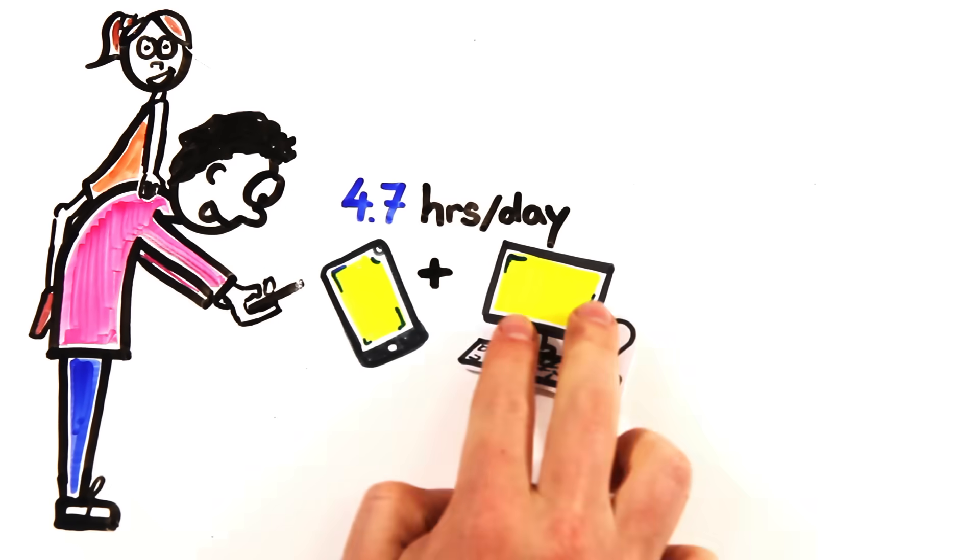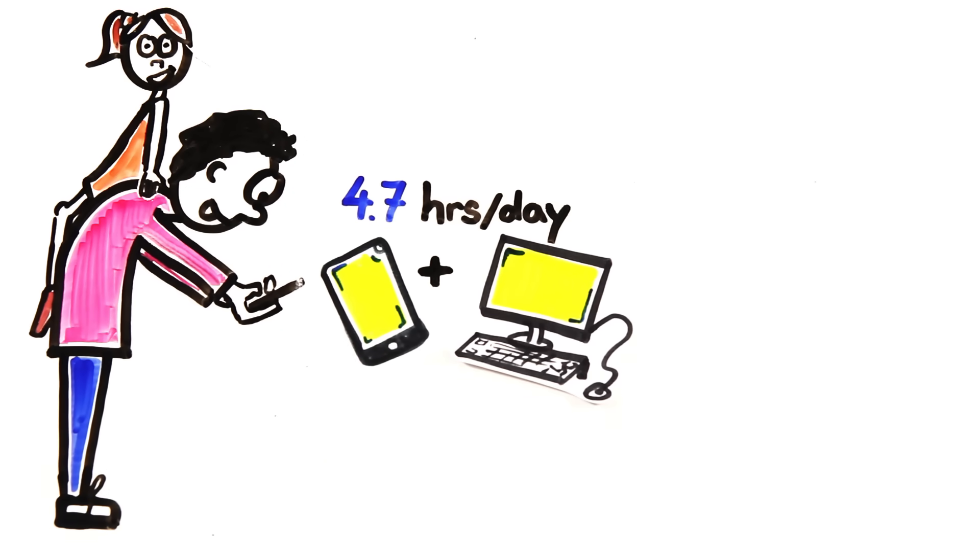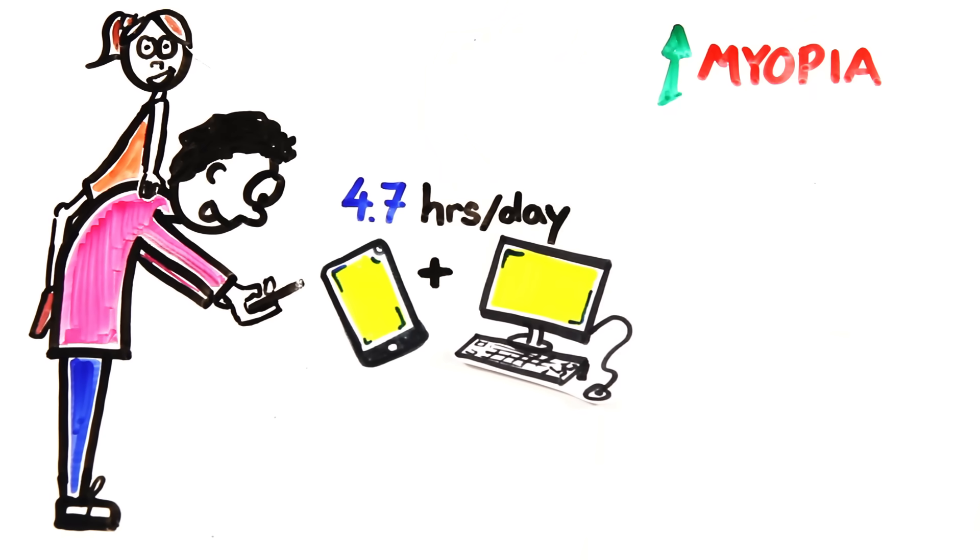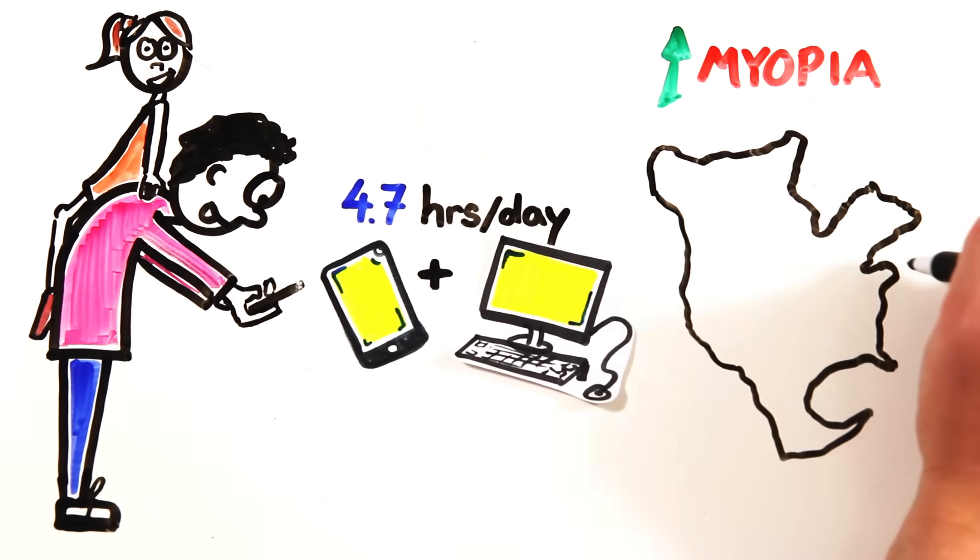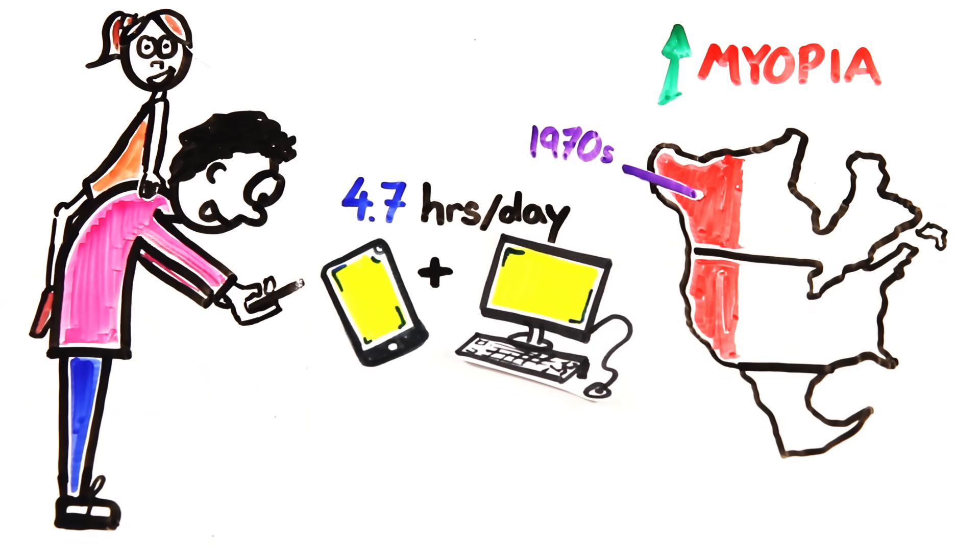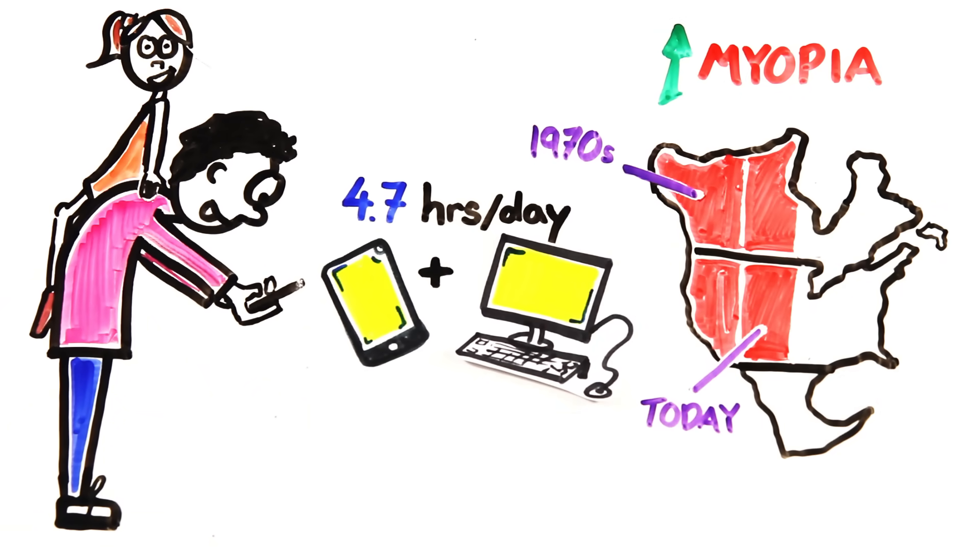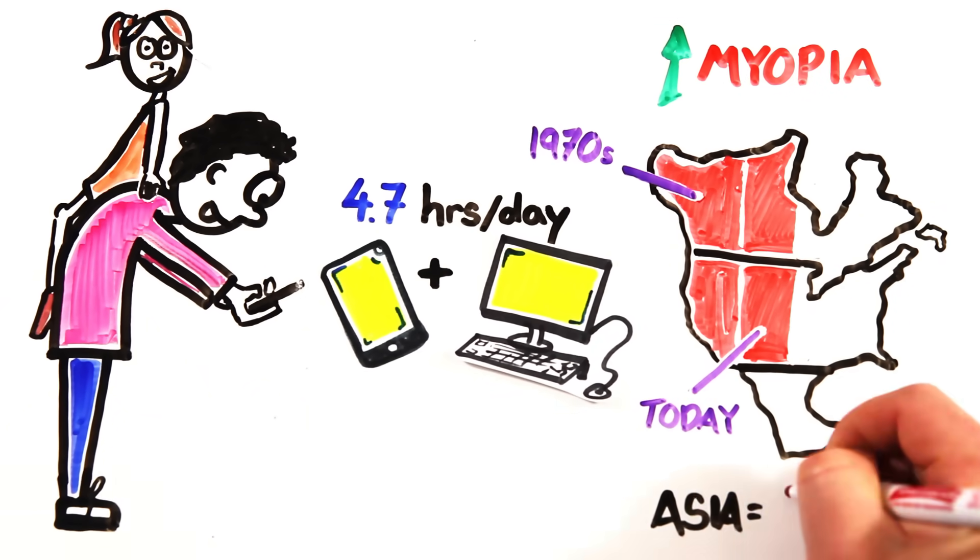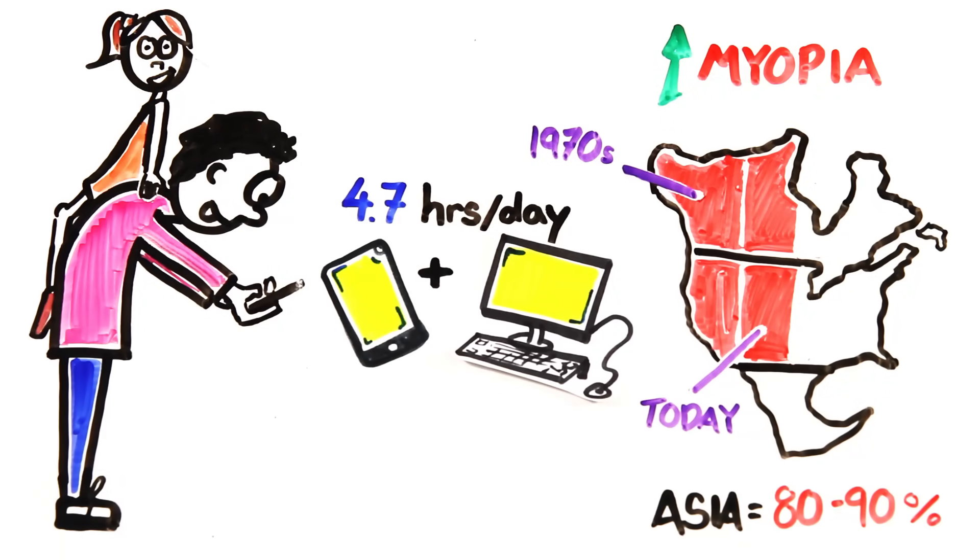This, combined with the length of time spent in front of computers, has led to an increase in the prevalence of myopia or nearsightedness in North America. In the 1970s, about one-quarter of the population had myopia, where today nearly half do. And in some parts of Asia, 80-90% of the population is now nearsighted.